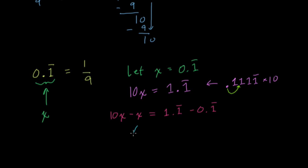What is 10x minus x? Well, that's 9x. What is 1.1 repeating minus 0.1 repeating? Well, you can think of this as subtracting all the 0.1 repeating from the number. So we have 1, 0.1 repeating.